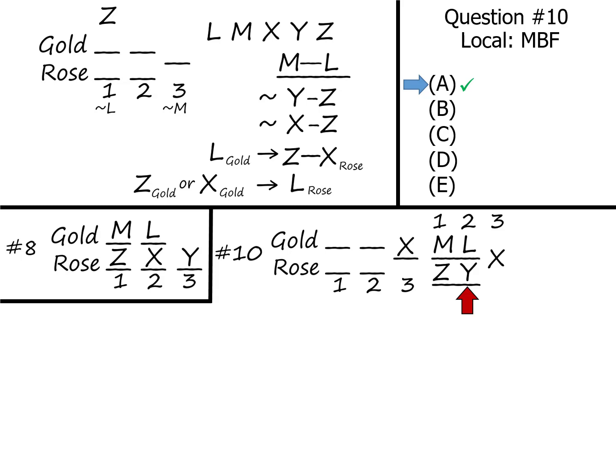That means that the remaining answer choices are wrong. We can glance at them to see why. Answer choice B says that M's speech is in the same room as X's, which could be true because we don't know what room either are in.